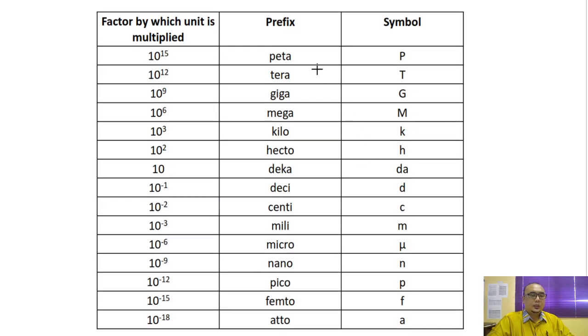Lagi satu yang you all perlu tahu adalah factor by which unit is multiplied. So for example, kalau kita tahu bahawa kalau kilo, kilo automatically kita tahu dia adalah 10 power of 3. Jadi, dia punya symbol adalah K. Kemudian kalau giga, ada yang kita tahu giga is 10 power of 9. Dia punya symbol adalah capital G. Dan seterusnya. So you boleh tengok. Kalau milli, 10 power of negative 3 dan dia punya unit adalah small m.